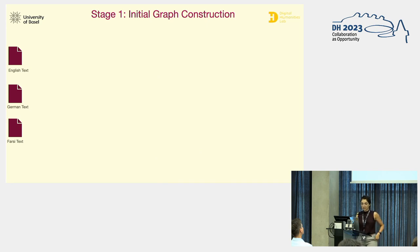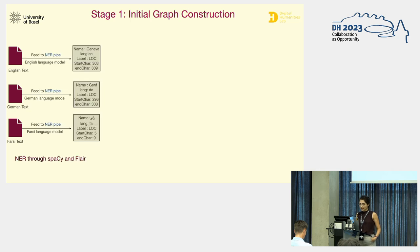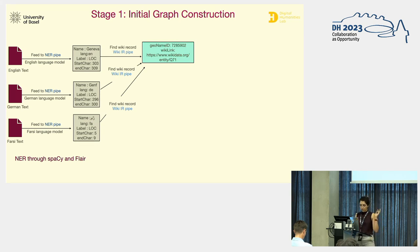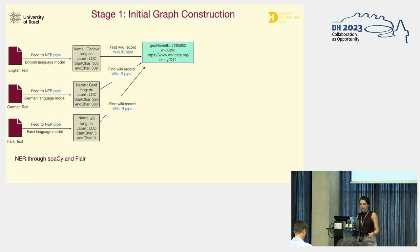The first pipe performs named entity recognition using spaCy or Flair, depending on the language, with a pre-trained language model. It tags named entities — persons and locations — in the text and returns the entity type and character positions. Next, the Wikidata information retrieval pipe processes the NER results: the main properties specified in the ontology for each tagged named entity are retrieved from Wikidata by sending requests to the SPARQL endpoint. For a location like Geneva, we extract the GeoName ID and the Wikidata record IRI and store them in the graph.